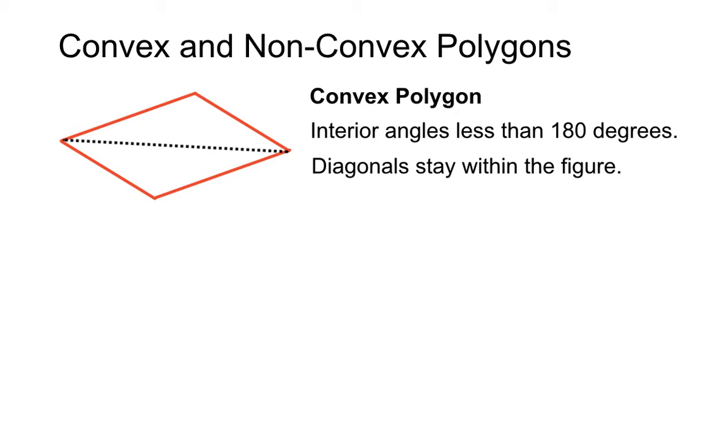Here's one diagonal. It's completely within the figure itself. And the other diagonal is completely within the figure. So interior angles are less than 180 degrees, and diagonals stay within the figure in convex polygons.